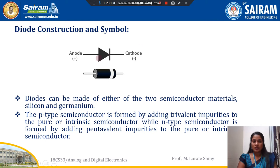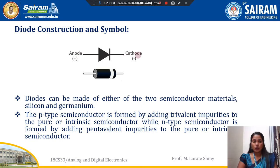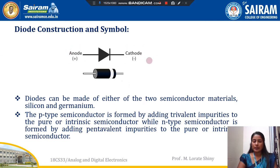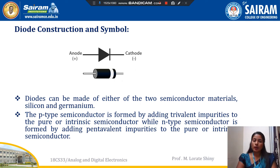Next is diode construction. This is the standard diode symbol — a triangle adjoining a line. The terminal connected to the flat surface of the triangle is called the anode. The other end is known as the cathode. The current always flows from anode to cathode. Diodes can be made up of either silicon or germanium semiconductor materials. The anode is made up of P-type material and the cathode is made up of N-type material. P-type semiconductor is formed by adding trivalent impurities to the pure or intrinsic semiconductor, whereas N-type semiconductor is formed by adding pentavalent impurities to the pure or intrinsic semiconductor.